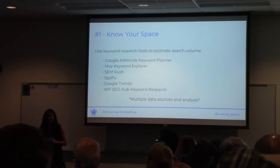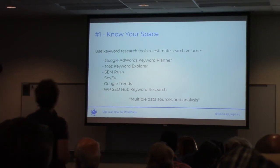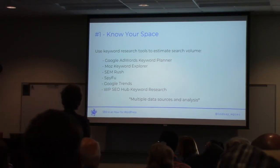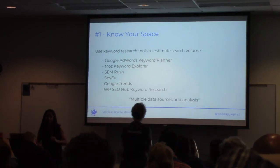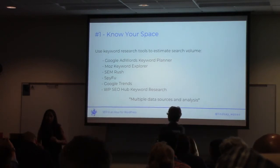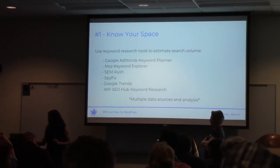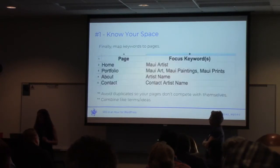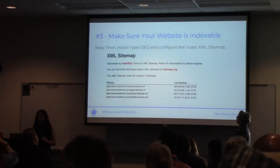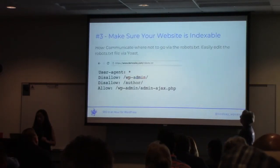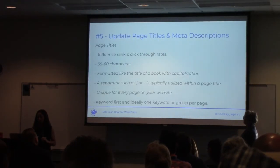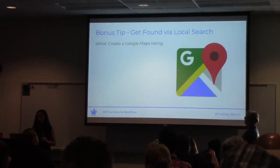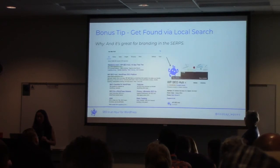When you have a search result that creates the nested relationship of pages and subpages to the homepage, and then for other sites you see all of those pages still under the same domain listed individually — what influences whether it displays one way or the other?